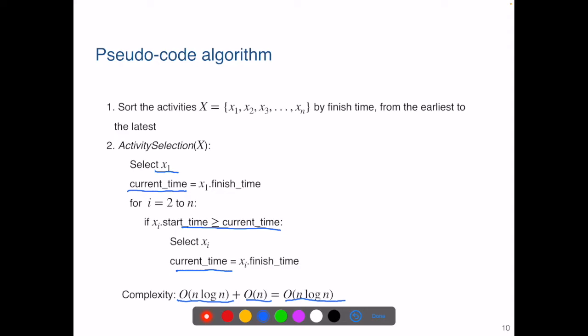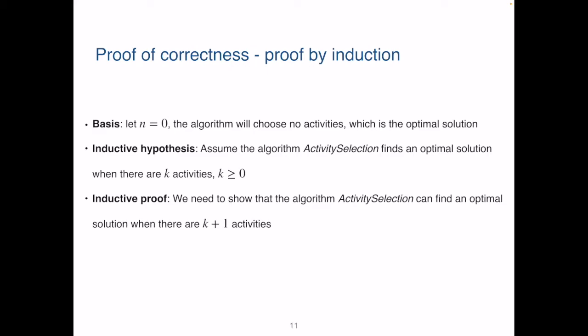Now the fun part. Proof of correctness. Again, we prove it using induction. The basis is when n equals 0. There is no activity to choose. Our greedy algorithm will give us an empty selection, and it is still an optimal solution. Our inductive hypothesis is that when we have k activities to choose from, our algorithm activity selection can find an optimal solution. Now we need to prove when there are k plus 1 activities, our algorithm activity selection can still find an optimal solution.